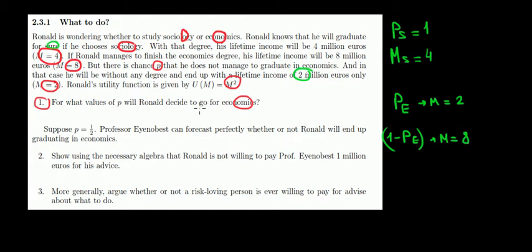Now the question is, when would we go for economics? We would go for that if in expectation we would have the same benefit, the same utility, as the option we know for sure. So the expected utility for economics has to be the same as the expected utility of the certain option, which is sociology.